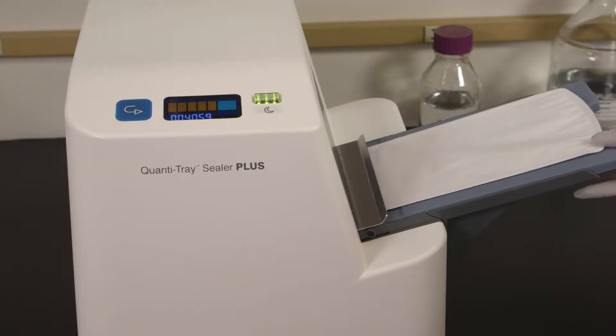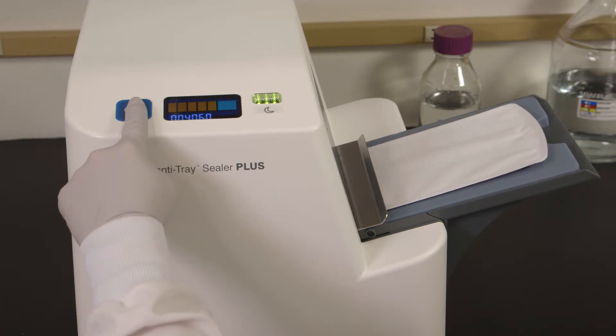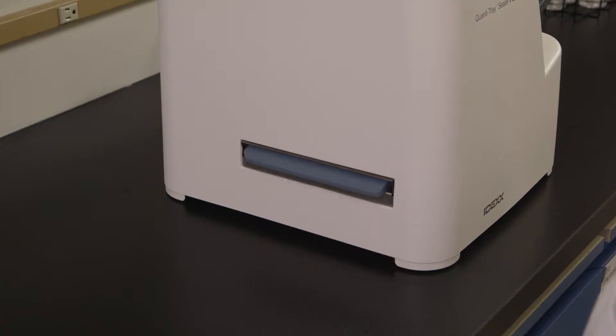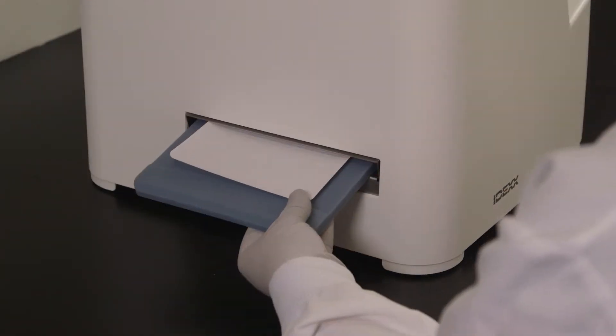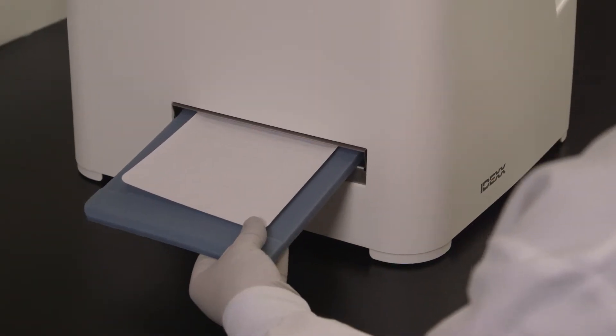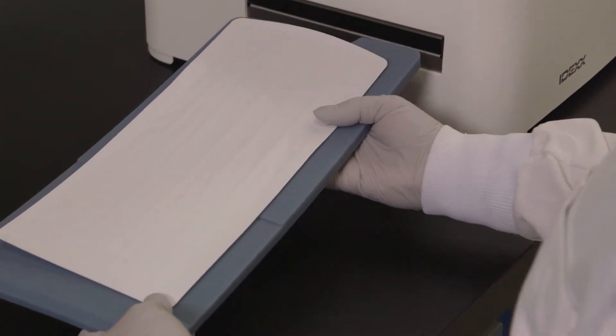If you need to reverse the motor, press and hold the reverse button. However, do not reverse the motor if the rubber insert is completely inside the sealer. The sealer distributes the sample mixture into the Quantitray LEG-ALERT wells, seals the wells, and partially ejects the sealed tray. Remove the rubber insert and tray from the sealer.